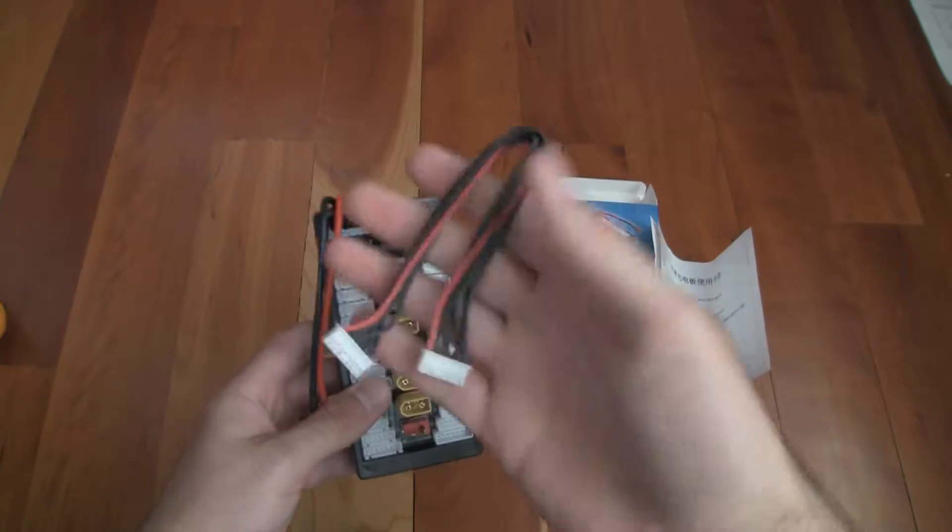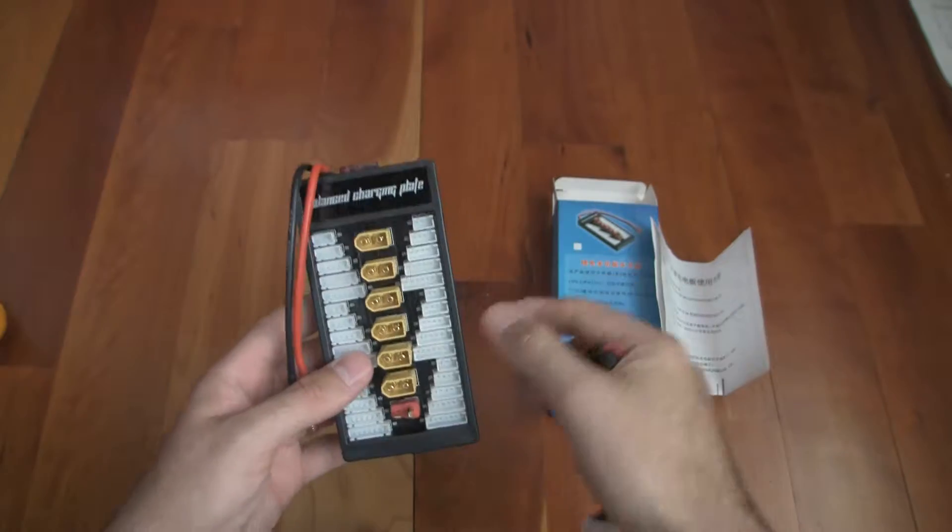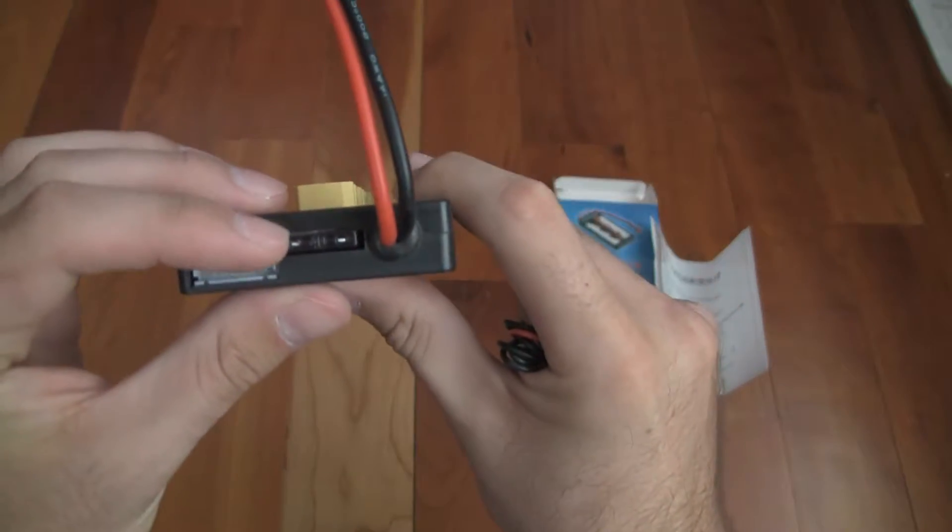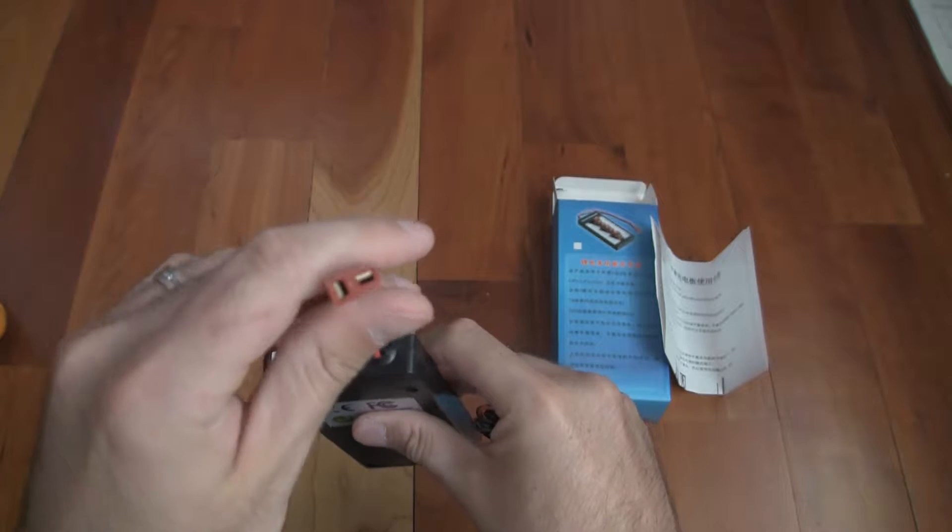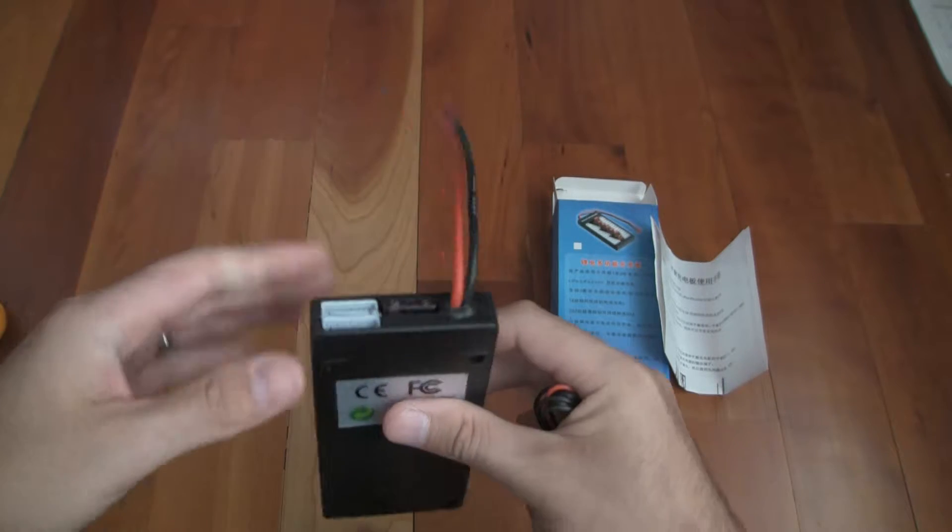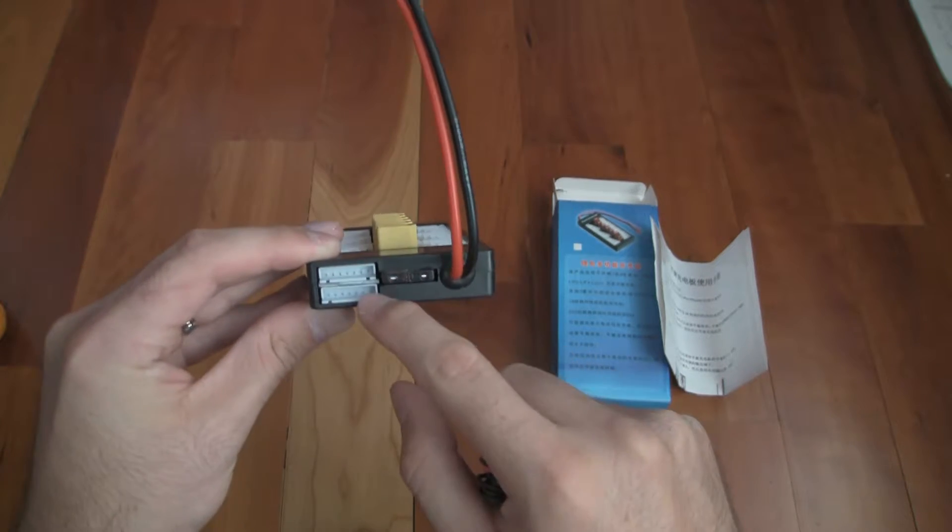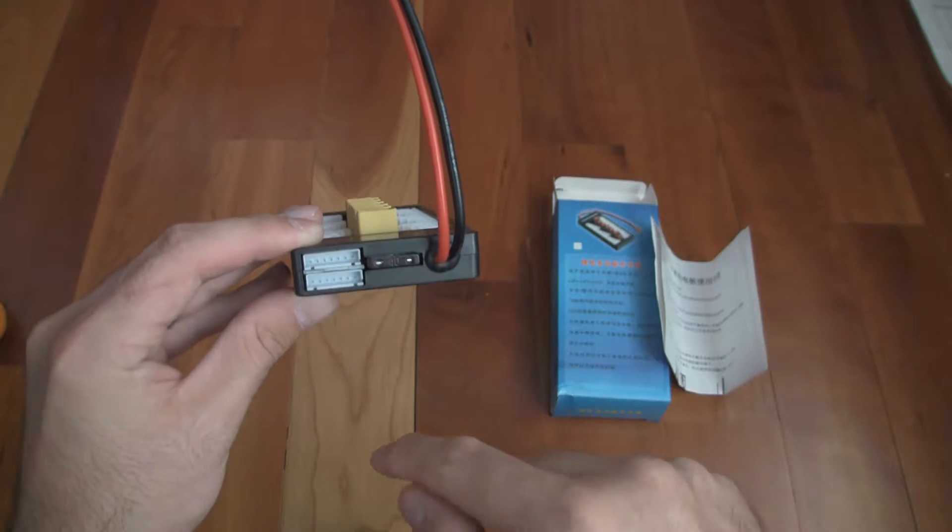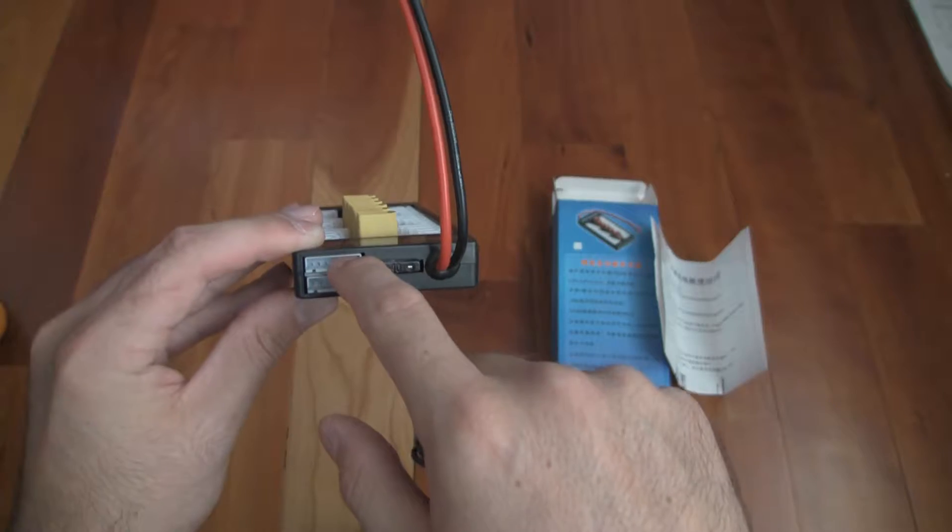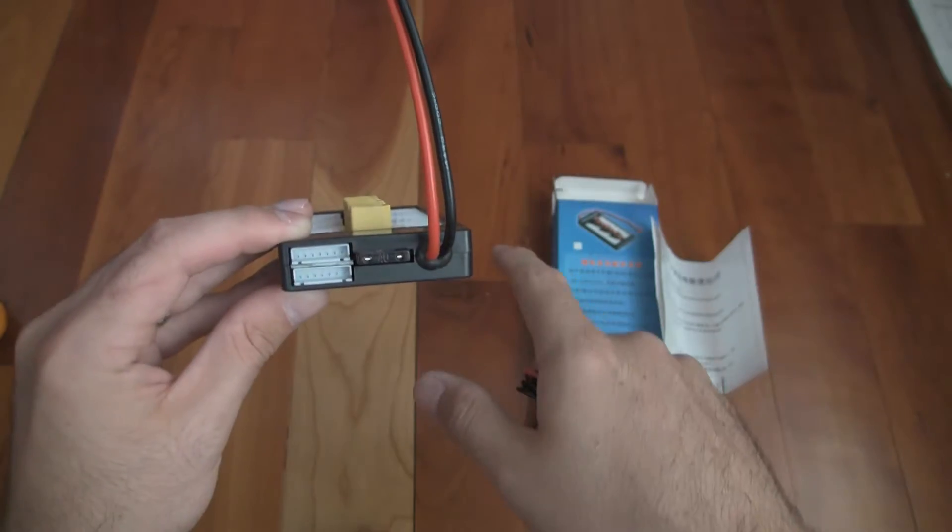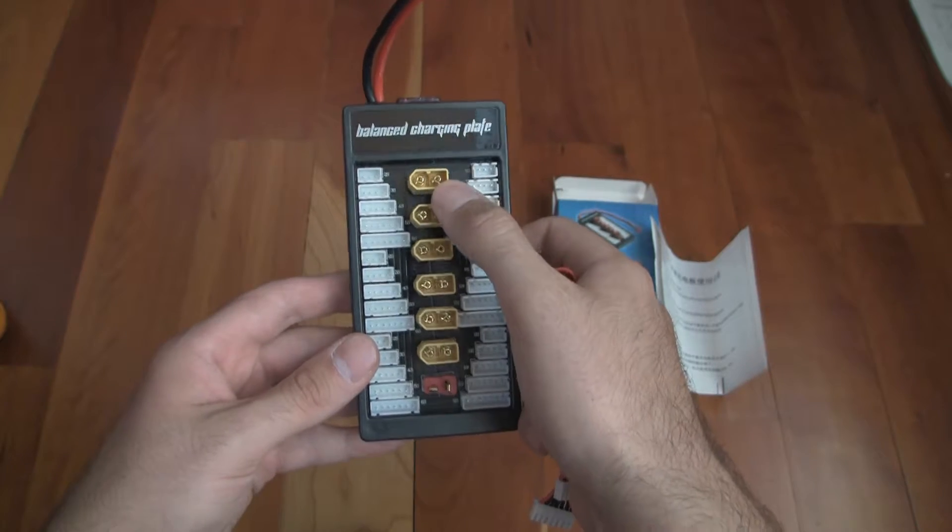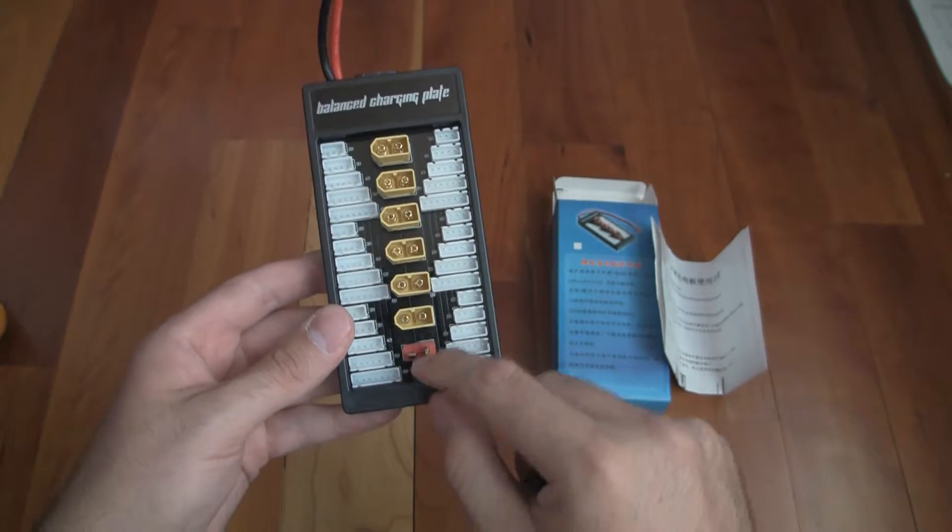It comes with a balance cable and a fuse is already installed - that is a 40 amp fuse. It has the Deans connector, has two sets of balance sleeves, one coming from and one going out to. So one coming from the charger and the other one going out to another board. It's got XT60 connectors with a Deans connector for the next board.